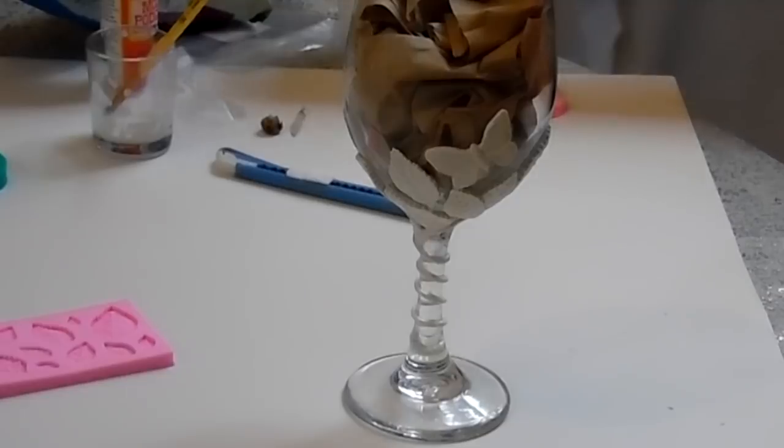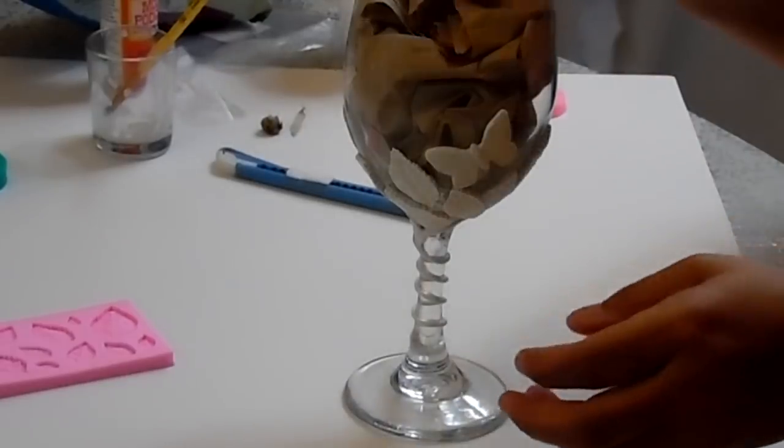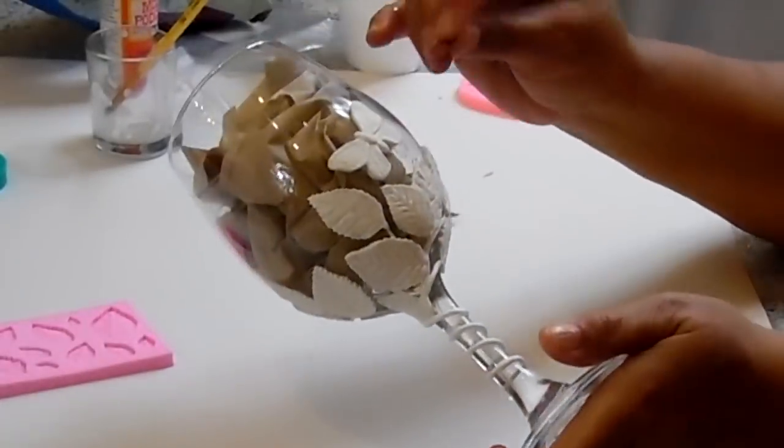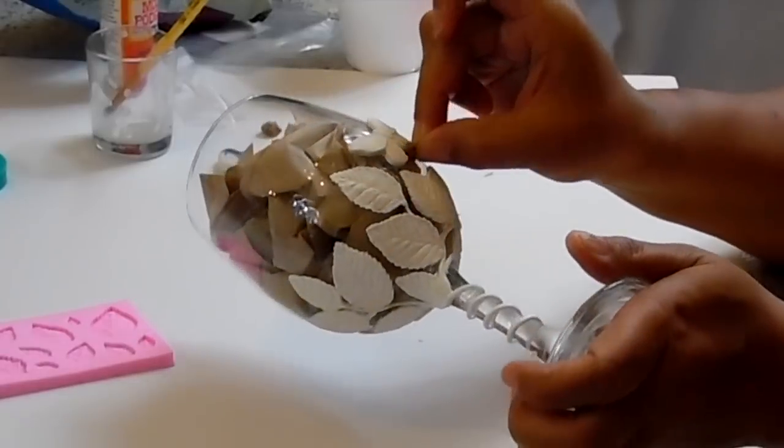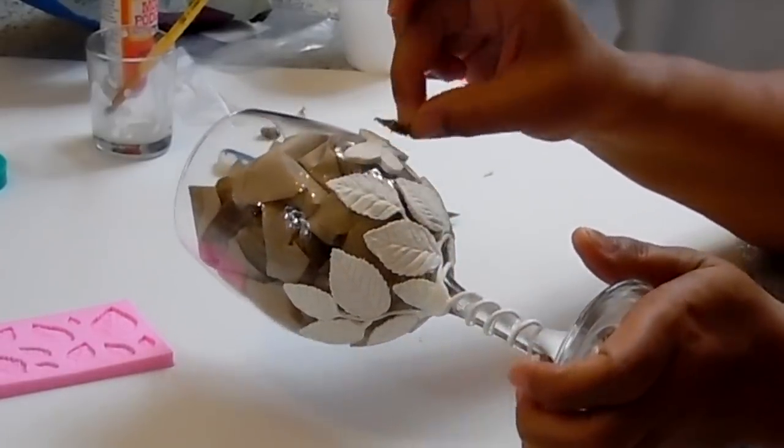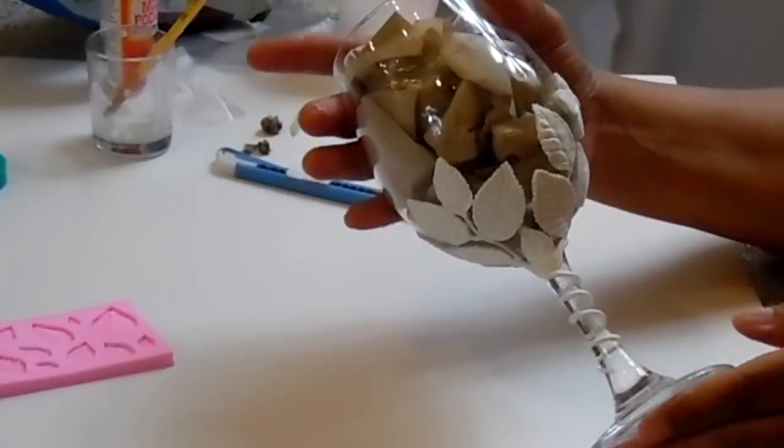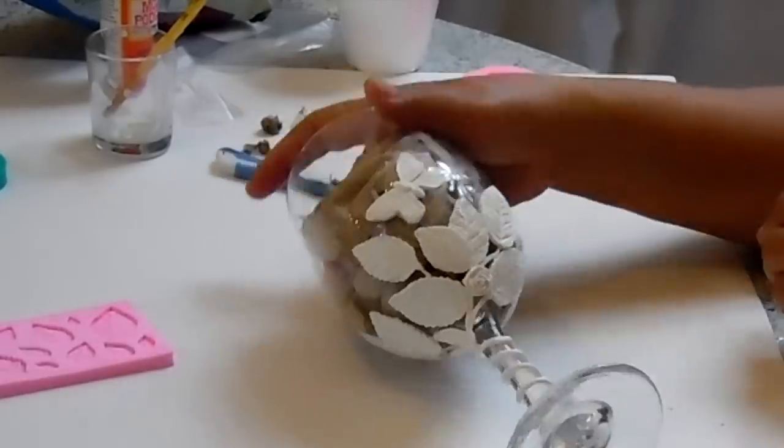While you're adding your decorations, if you see any Mod Podge smeared on the glass, take this time now to clean it up. It's much easier to clean it up now than later. Continue to add decorations to your glass until you're done.